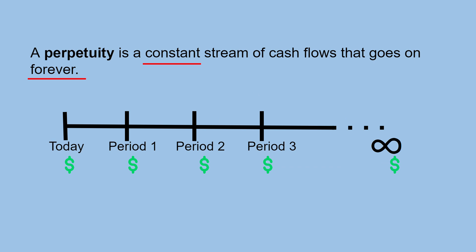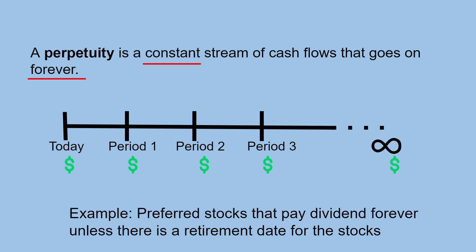A perpetuity is a constant stream of cash flows that goes on forever. An example can be preferred stocks that pay dividends forever, unless there is a retirement date for the stocks.